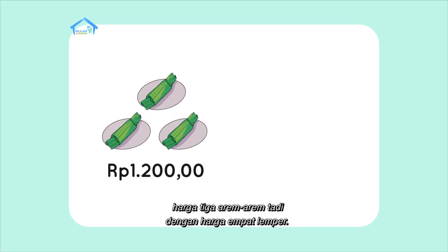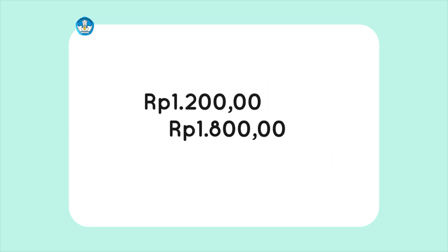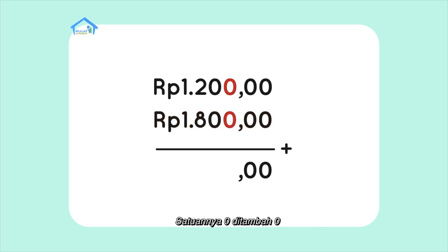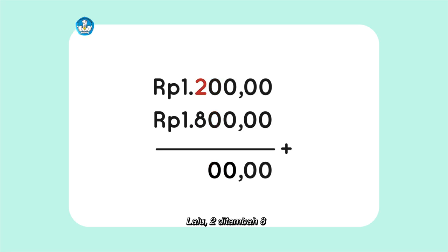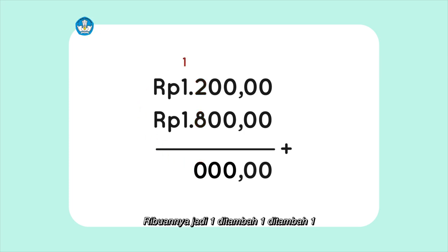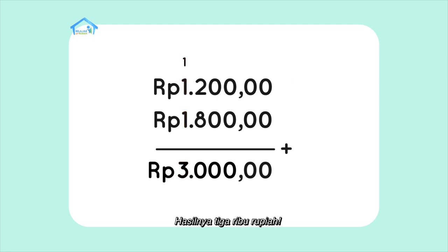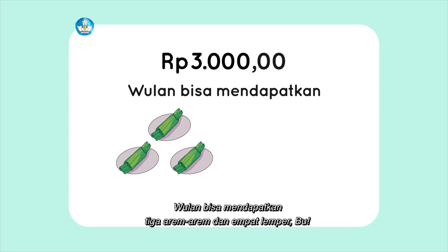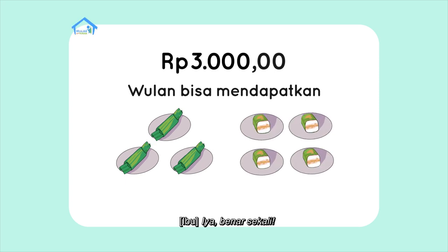Nah, coba kamu tambahkan harga 3 arem-arem tadi dengan harga 4 lemper. Jadinya 1.200 rupiah ditambah 1.800 rupiah, bu. Satuannya 0 ditambah 0 sama dengan 0. Puluhannya juga sama. Lalu, 2 ditambah 8 sama dengan 10. Angka 1 puluhannya pindah ke atas. Ribuannya jadi 1 ditambah 1 ditambah 1 sama dengan 3. Hasilnya 3.000 rupiah. Dengan uang 3.000 rupiah, Ulan bisa mendapatkan 3 arem-arem dan 4 lemper, bu. Iya, benar sekali.